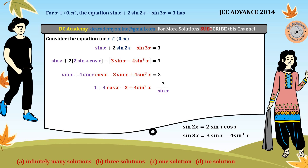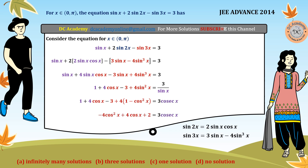Since we have a cos term, we convert sin²x on the left-hand side using 1 − cos²x. After simplifying, the left-hand side becomes a polynomial in cos x and the right-hand side becomes a cosec term. This resulting equation doesn't look easy to solve directly — we need to use some conceptual analysis.